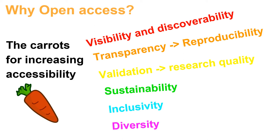Thorough validation can happen by peer reviewers, but also the wider community. This can happen in the preprint stage, leading to greater research quality. With greater accessibility and transparency, research is made more sustainable. More researchers can reuse and build upon your research. More accessibility means you are including more people in your research — this includes other researchers, the wider scientific community and the general public. This in turn allows for greater diversity in our research community, and more broadly, greater diversity in those that interact with and benefit from research.